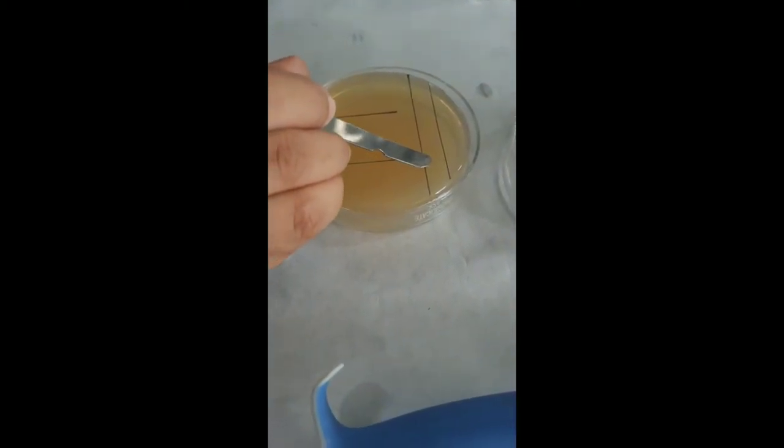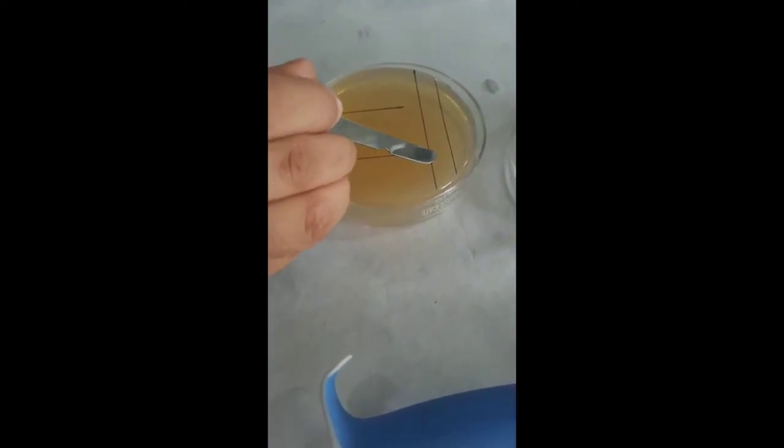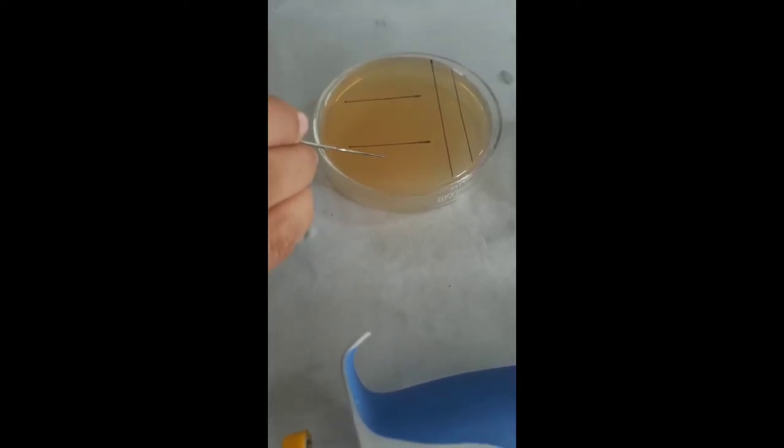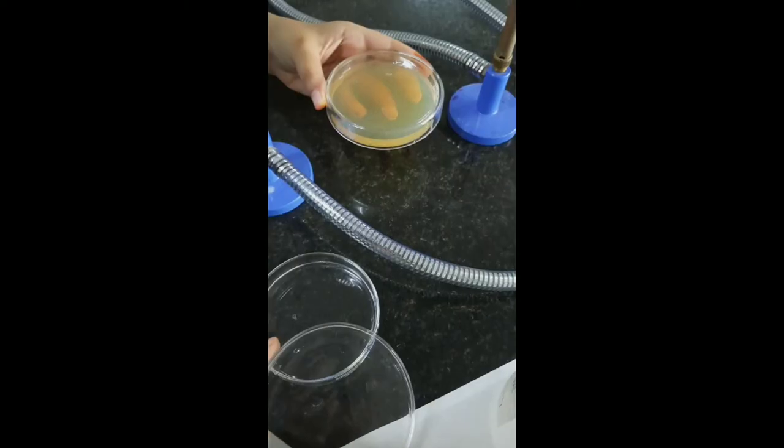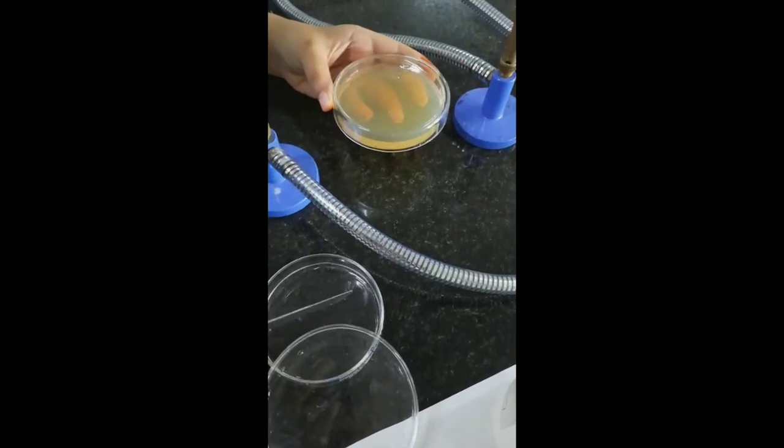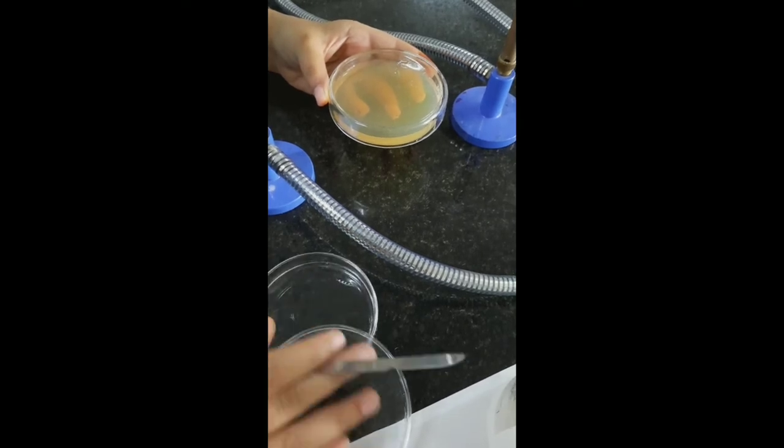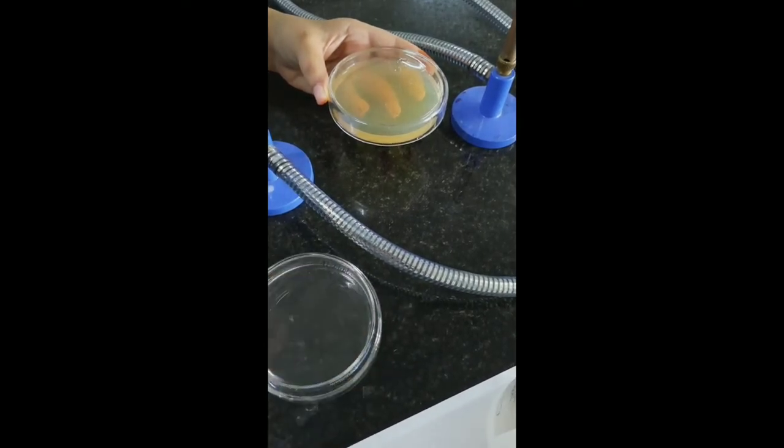Here we will create a ditch by removing the agar using the forceps, and here we will place the two test cultures. We have to dip our forceps into the alcohol and then flame.